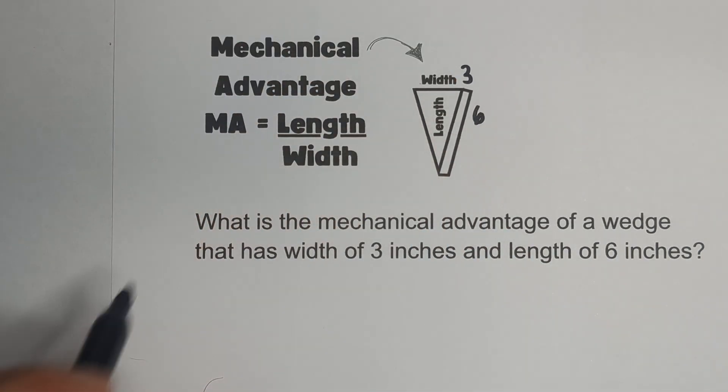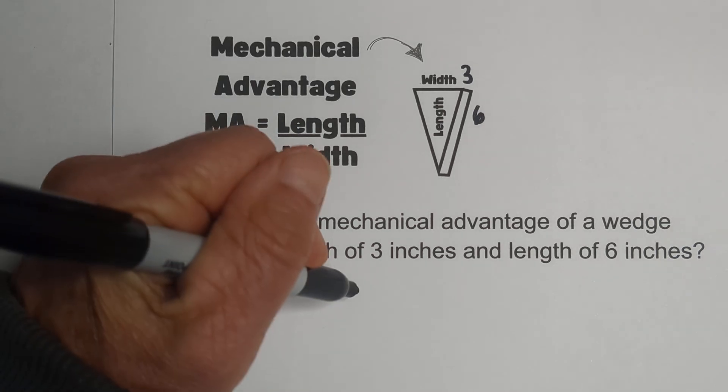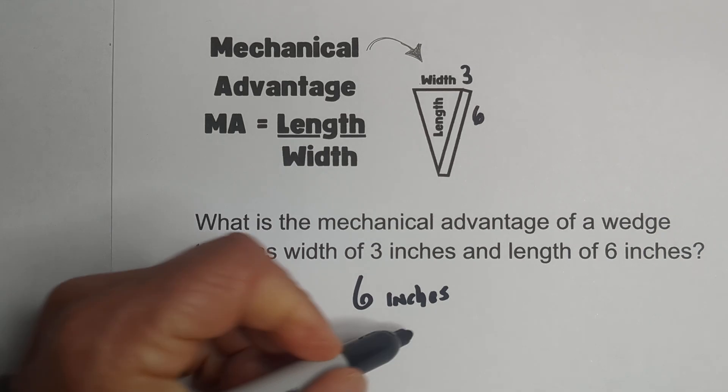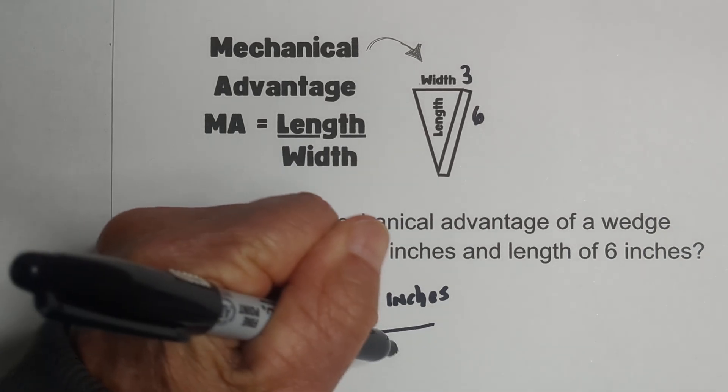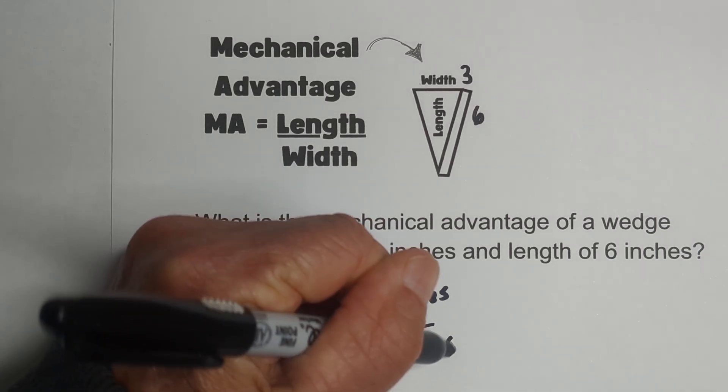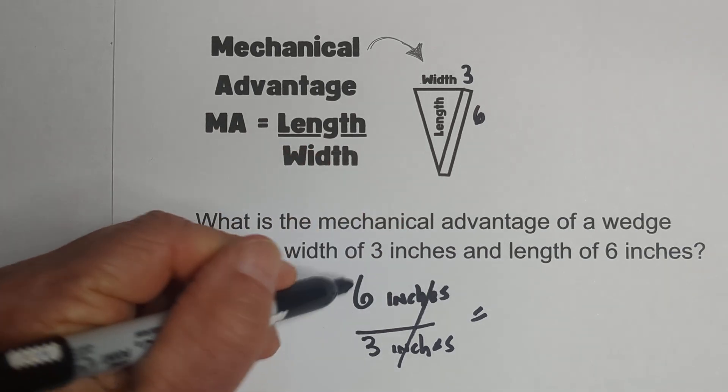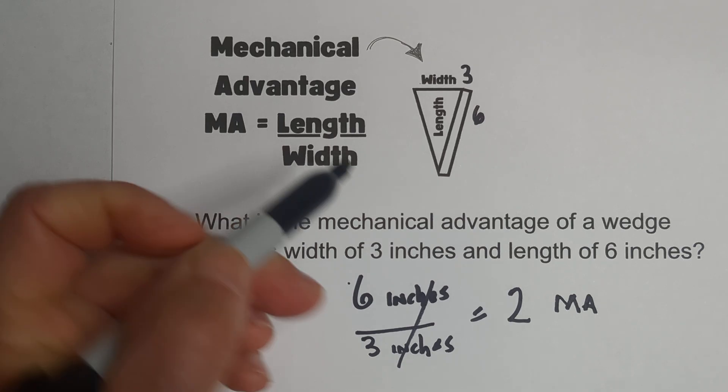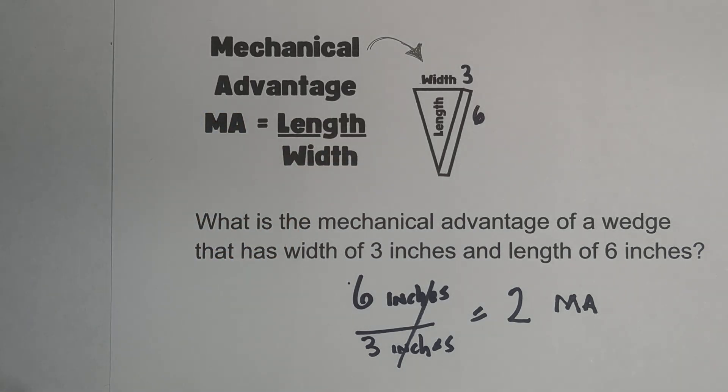So we just plug it in here. The length is 6 inches. The width is 3 inches. These cancel. 6 divided by 3 is 2. So your mechanical advantage of this wedge would be 2.